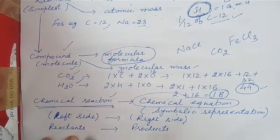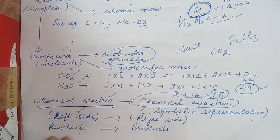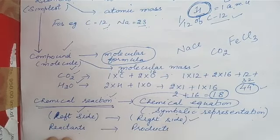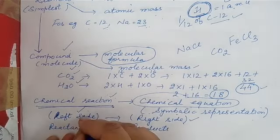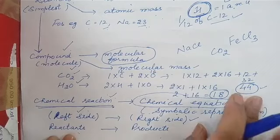Now the substances that react — the reactants — are always written on the left side, and the substances that are produced — the products — are always written on the right side.